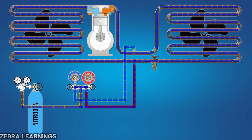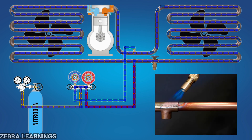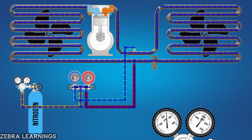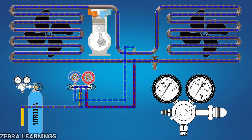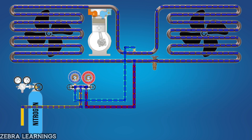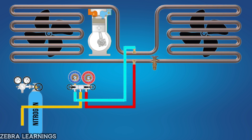We will discuss in the next video how to repair a detected leak using the brazing method. If there are no leaks, close the nitrogen cylinder and turn the handle on the regulator fully counterclockwise to reduce the pressure. Then remove the yellow hose from the regulator and slowly open the valve on the low-pressure line to release all the nitrogen gas. Next, vacuum the unit, recharge it with refrigerant, and run it.